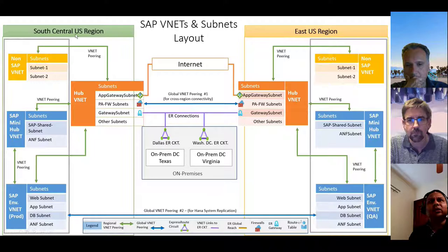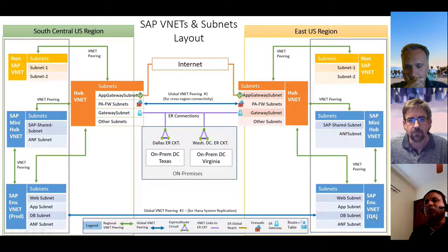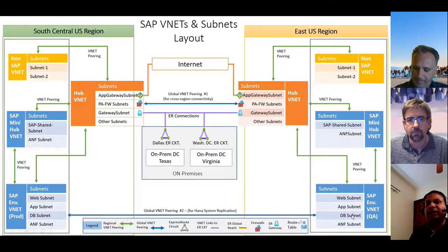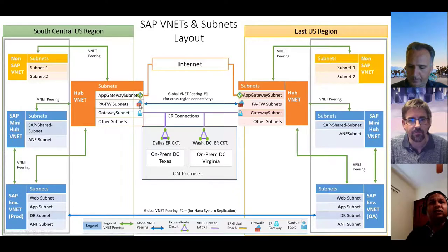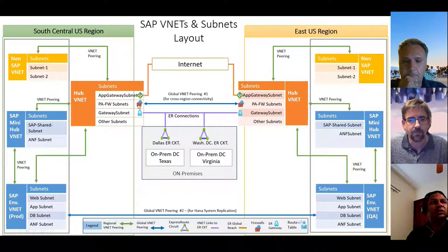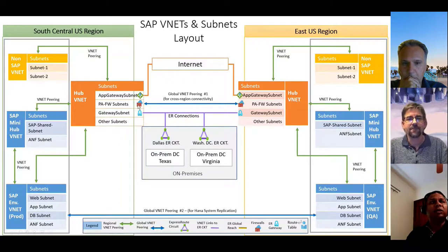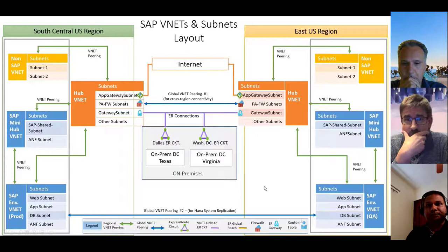The same subnet topology from South Central US is mirrored in the East US region — hub VNet with the same subnets, non-SAP VNet, SAP Mini Hub, and SAP QA VNet with web, app, database, and ANF subnets. The Palo Alto firewall solution is critically important in this architecture since all traffic routes through it. The customer was very diligent, setting up a large cluster of 9-10 E-series VMs providing roughly 40 gigabits per second of network throughput, and they diligently monitor it to ensure it does not get overloaded.